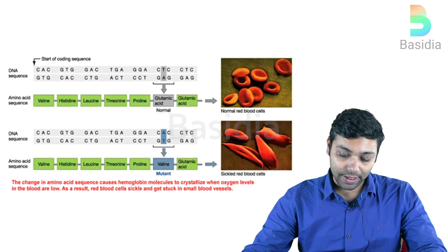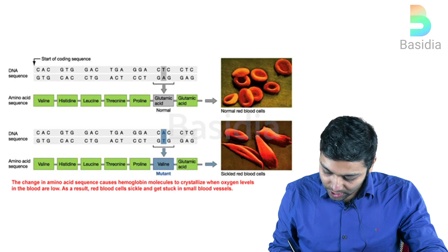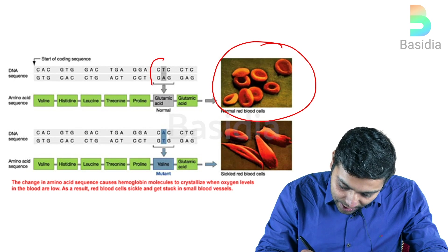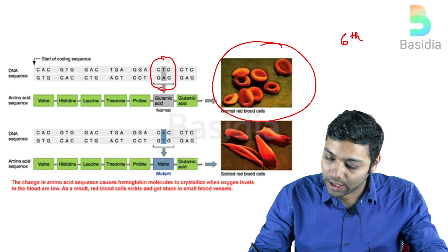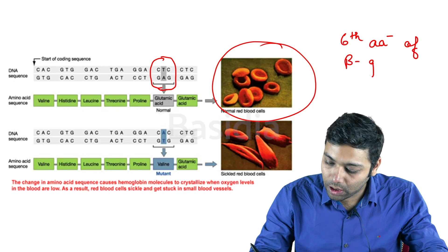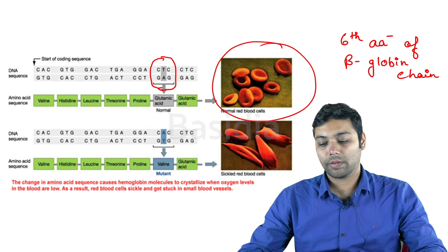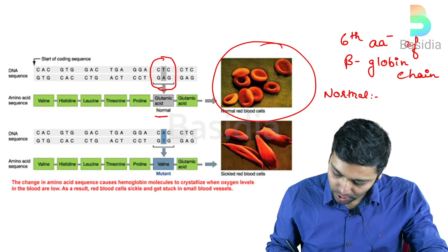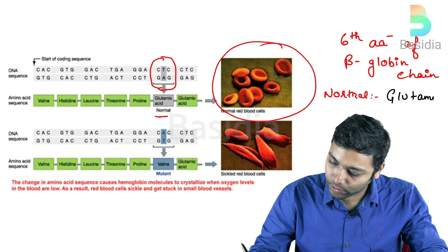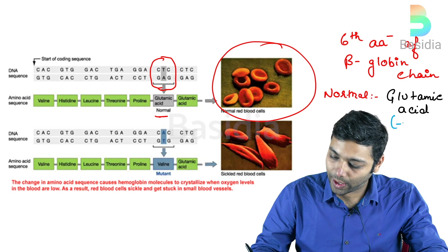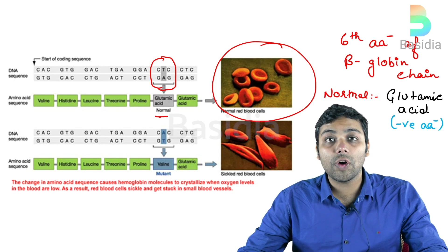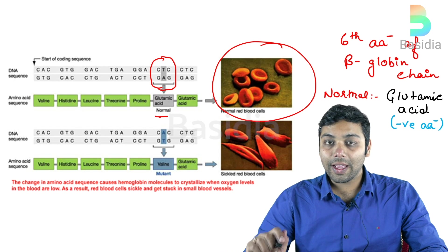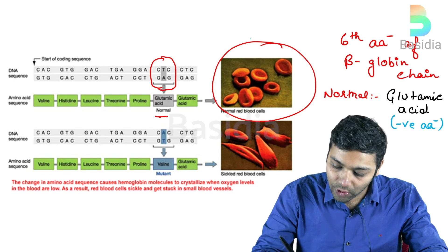In the genetic coding taking place in the sickle cell individual, the first diagram represents a normal RBC, where the entire problem starts with the sixth amino acid of the beta globin chain. In a normal RBC, the sixth amino acid is glutamic acid, which is a negative amino acid. Since it is negative, it can form electrostatic forces of attraction with a positive amino acid, leading to proper folding of the beta globin chain. The allele responsible for this is HbA.